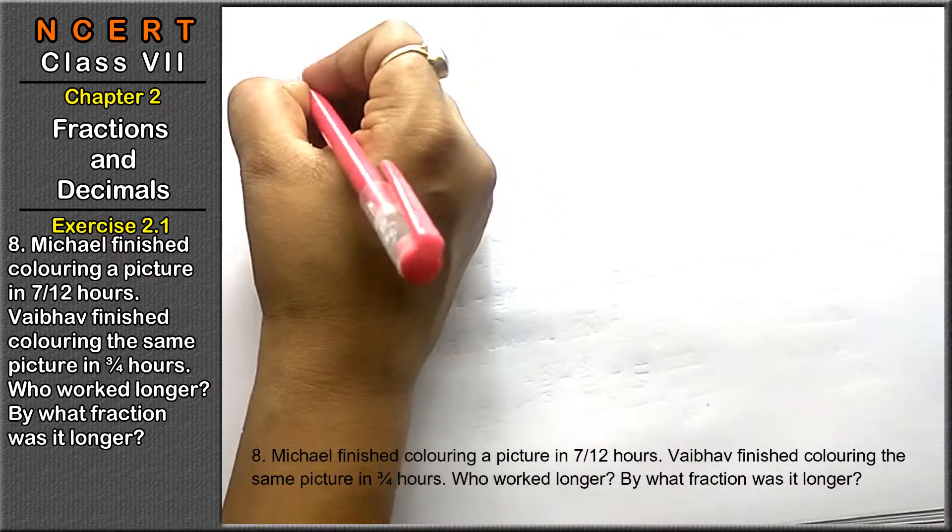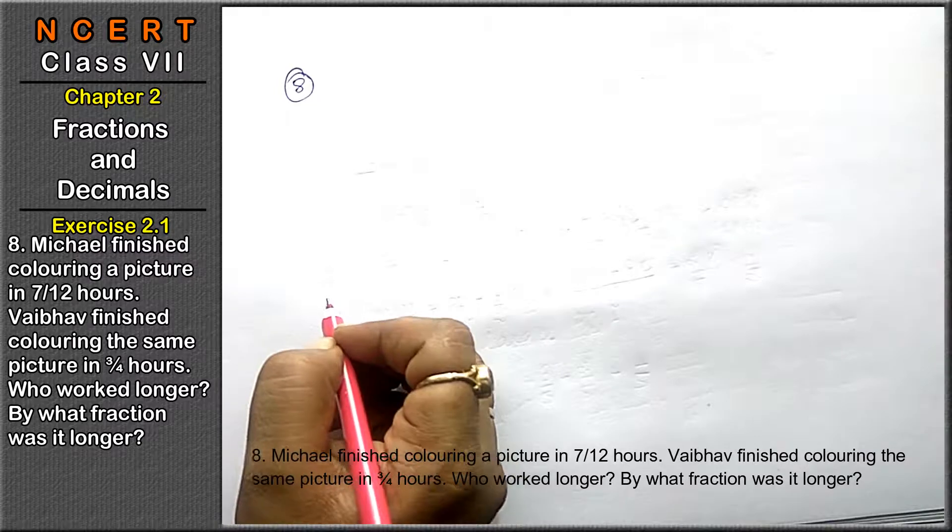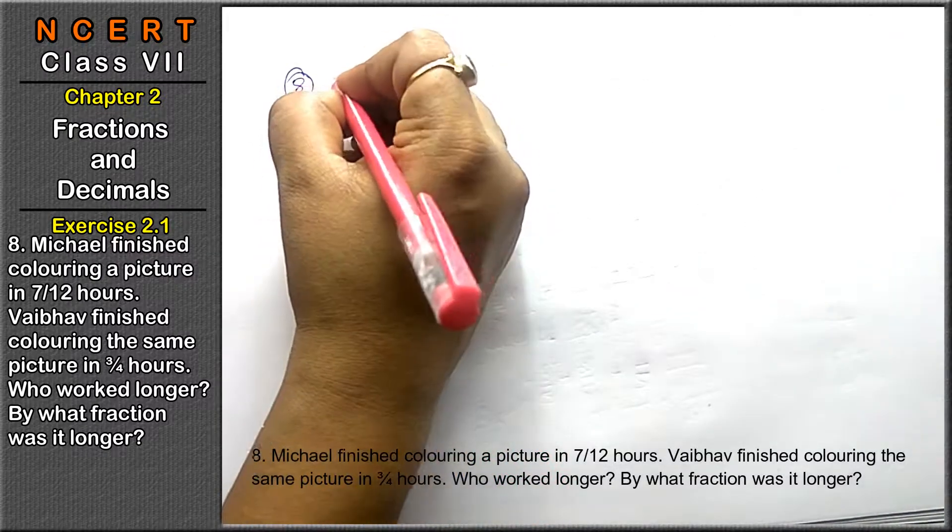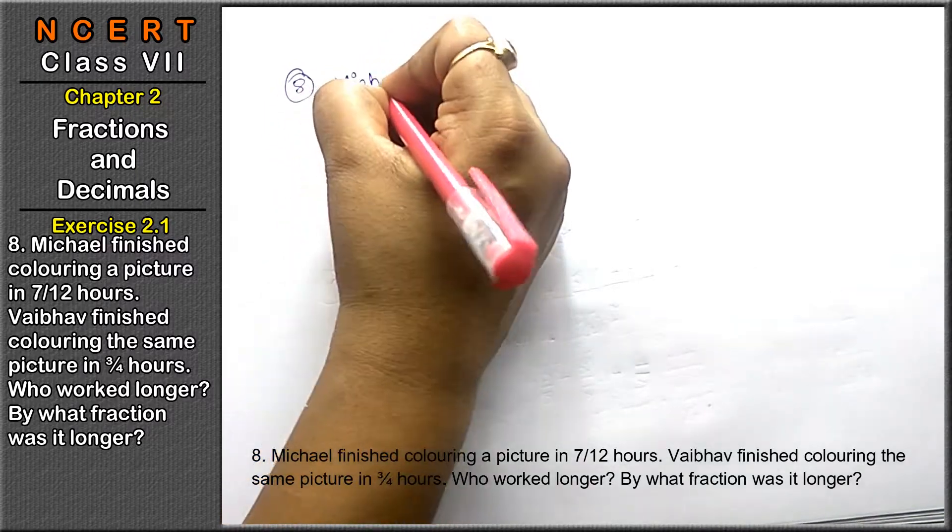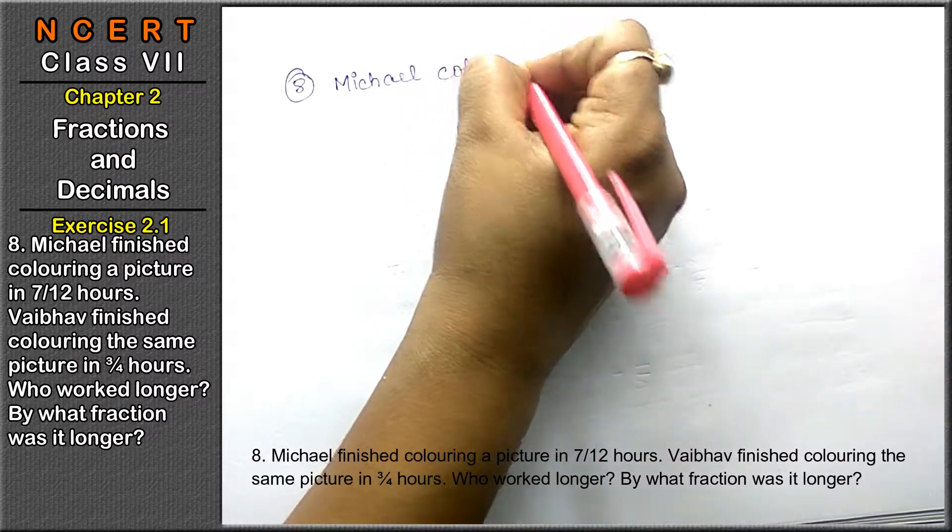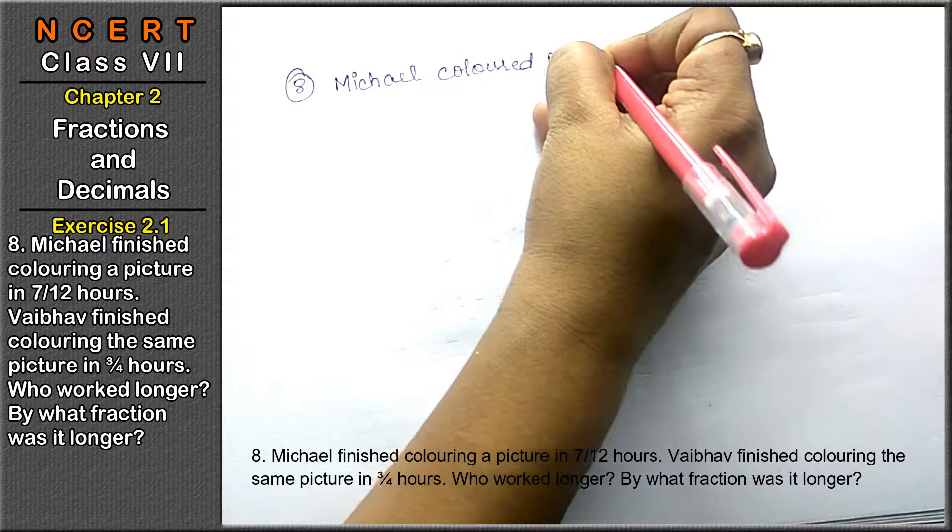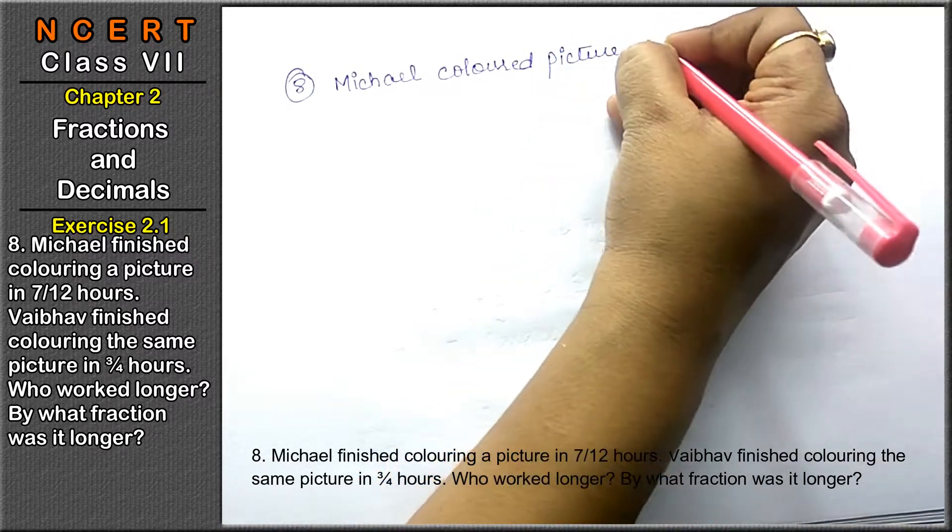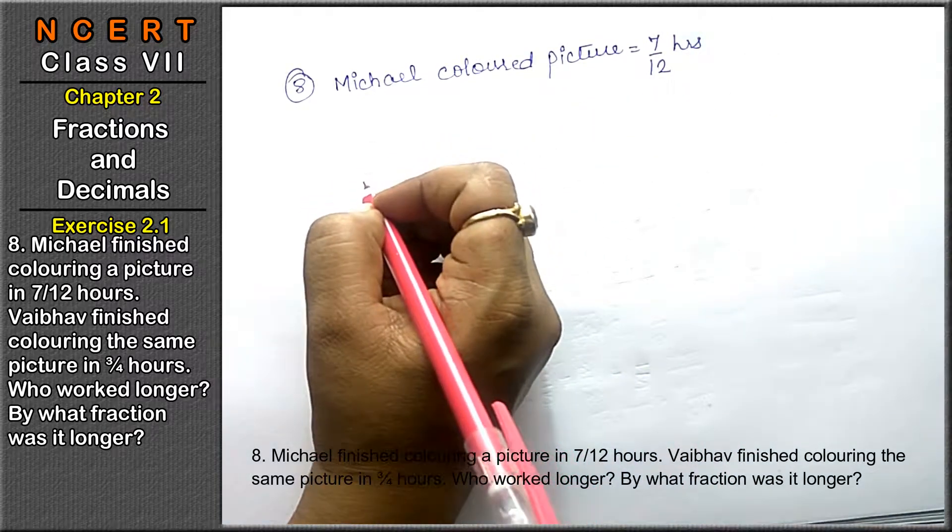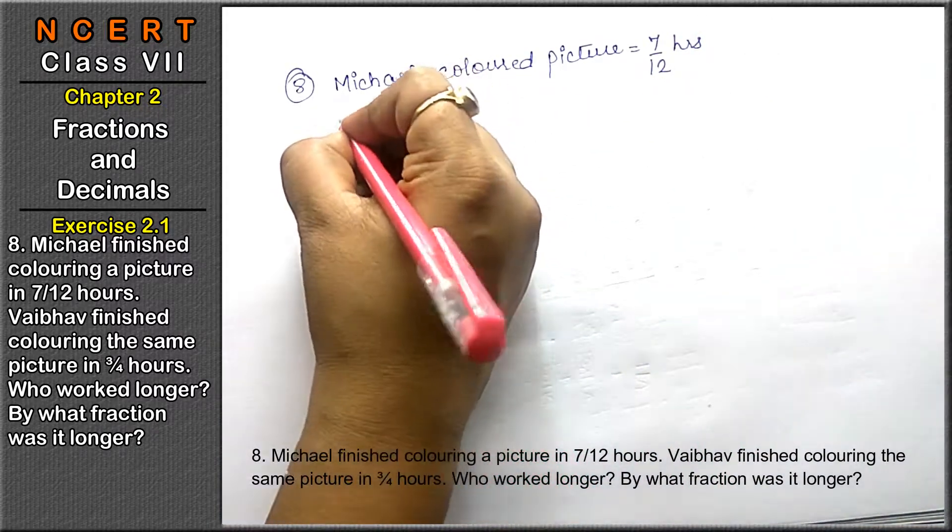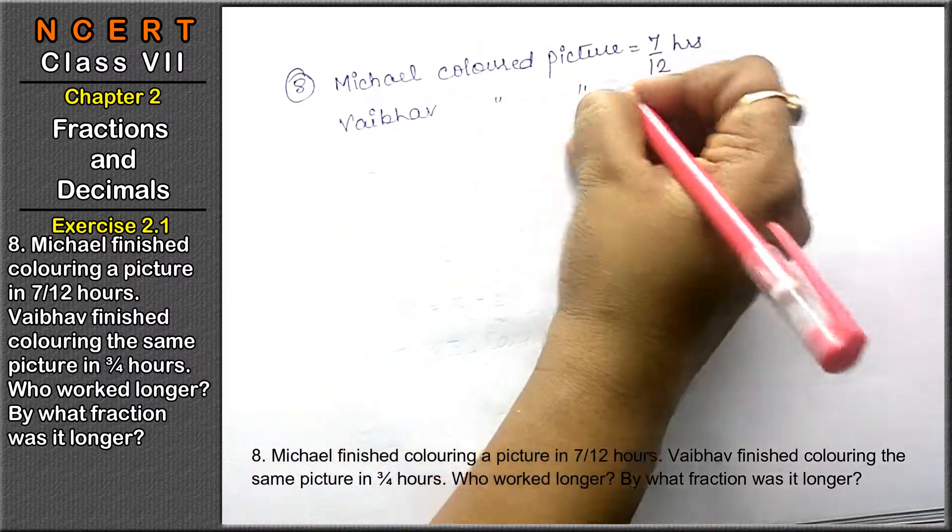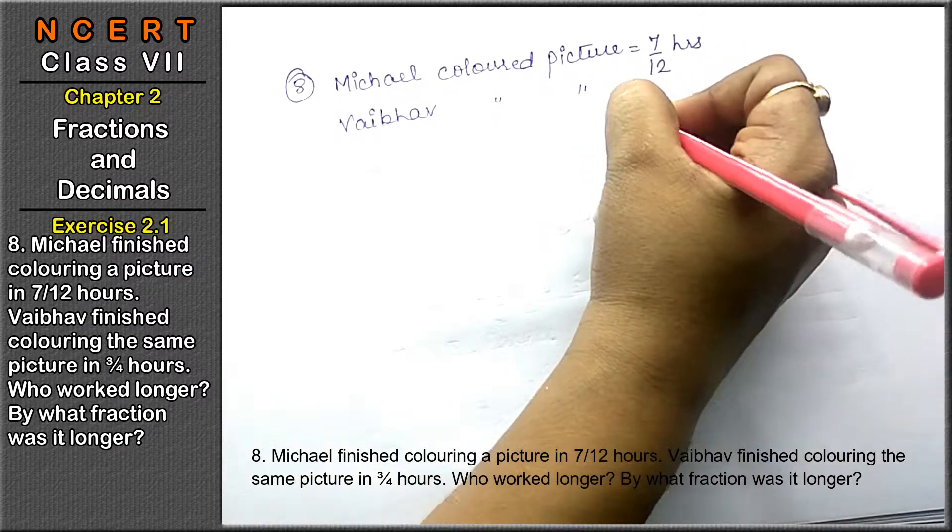Eighth question: Michael finished coloring a picture in 7 upon 12 hours. Vaibhav finished coloring the picture in 3 upon 4 hours. Who worked longer?